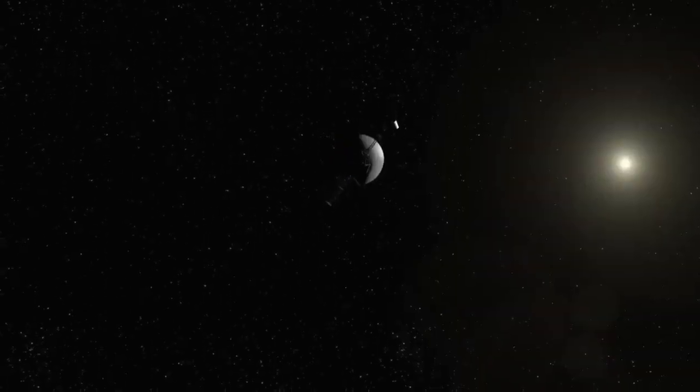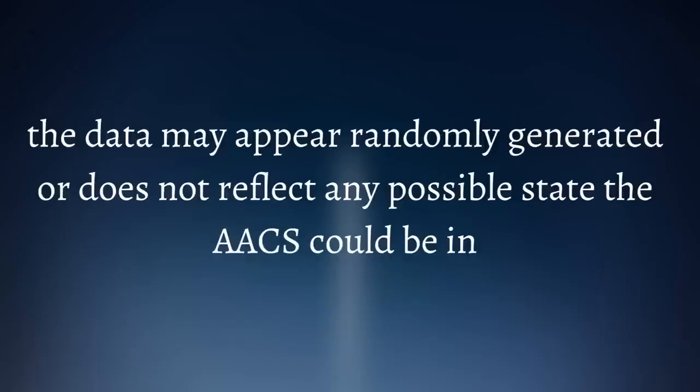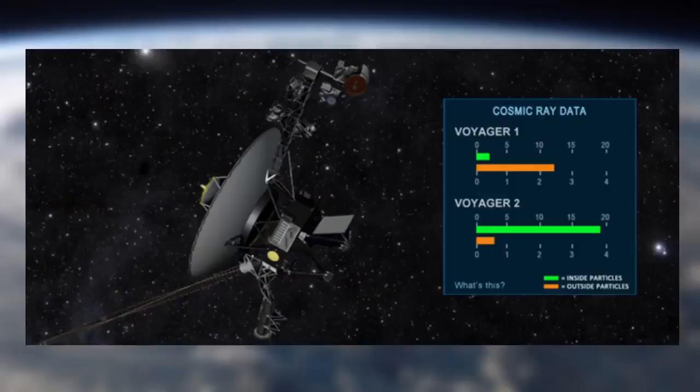Nonetheless, the AACS is sending junk telemetry data to the spacecraft's handlers. NASA explained about the glitch. The data may appear randomly generated or does not reflect any possible state the AACS could be in. The NASA statement does not specify when or how long the problem has existed.